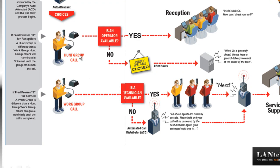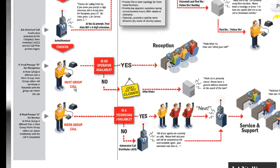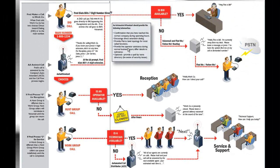The hunt group and work group can also be selections off the main automated attendant. The auto attendant can say 'Dial one for technical support,' route that call to the work group, and then the work group call processing function takes over. A combination of these capabilities is generally required to meet the call processing needs of a company.